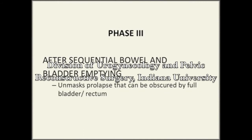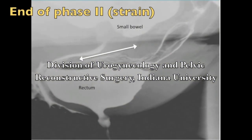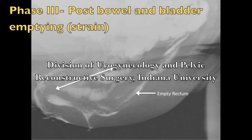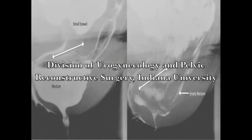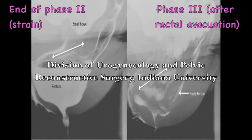The final phase of the triphasic technique involves evaluation of prolapse after bowel and bladder emptying, performed to unmask prolapse that could be obscured by the bladder or rectum. Although bladder emptying is performed on everybody, additional steps to evacuate the rectum are not necessary in patients who can empty the rectum satisfactorily during phase 2. This patient has a large contrast-retaining rectocele at the end of the defecatory sequence with a relatively normal-appearing rectovaginal space. After the patient performed maneuvers to evacuate her rectum, a large enterocele is seen in the rectovaginal space. If a large rectocele requires the patient to digitate in order to empty rectal contents, she should be allowed to do so and prolapse should be re-evaluated.